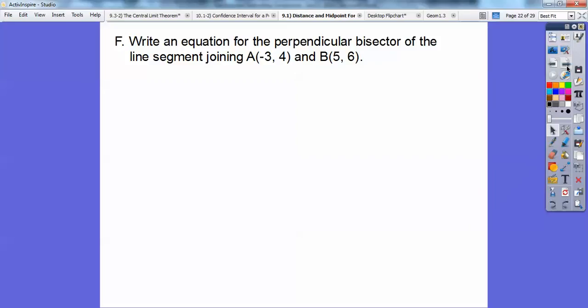Alright, so write an equation of the perpendicular bisector of the line segment that joins A is negative 3, 4, and B is 5, 6. So the perpendicular bisector, I first got to find the midpoint because it's going to go through the midpoint of this thing. So let's go ahead and find the midpoint. So the midpoint of A, B is 1, 5. Let's get a picture of this, by the way.